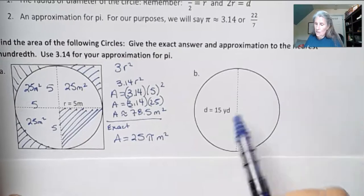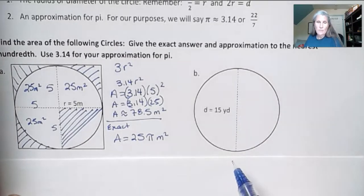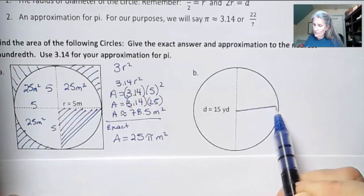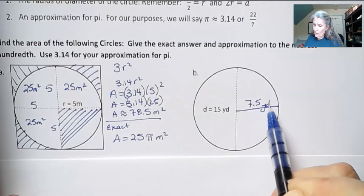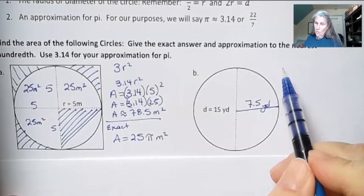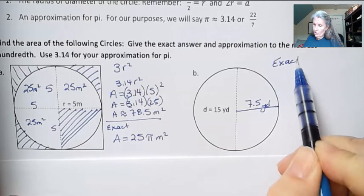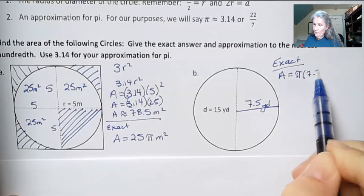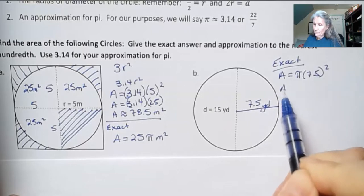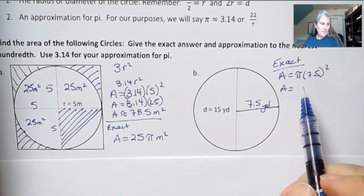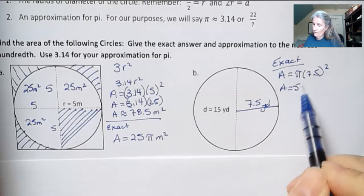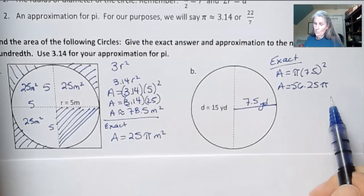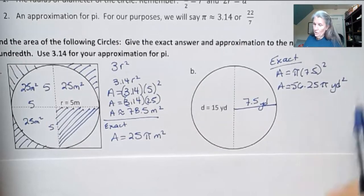In the next example, we have a diameter of 15. And if I find half of 15, that is 7.5. So I can say the radius here is 7.5 yards. So I want to find the area. Let's do the exact first on this one. The area is pi times 7.5 squared. And then 7.5 squared is 56.25. And that would be the exact answer with my units, which I want to include. It's yards squared.